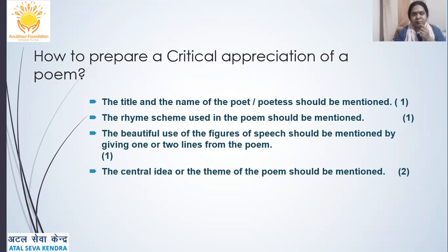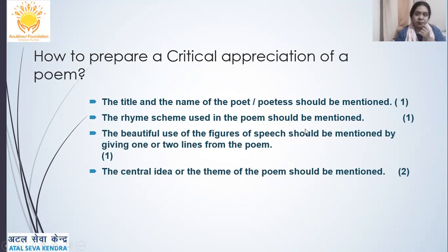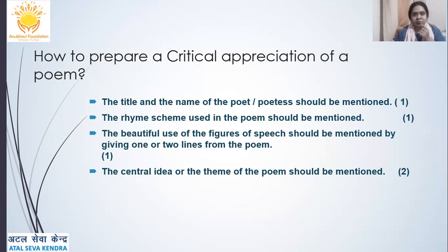How to prepare a critical appreciation of a poem? The marks are divided in this way: the title and the name of the poet or poetess should be mentioned — this is for one mark. The rhyme scheme used in the poem should be mentioned — this is also for one mark. The beautiful use of figures of speech should be mentioned by giving one or two lines from the poem, and the central idea or the theme of the poem should be mentioned — this is for two marks.